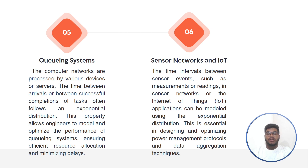The final application is in sensor networks and IoT. The time intervals between sensor events, such as measurements or readings in sensor networks or Internet of Things applications, can be modeled using the exponential distribution. This is essential in designing and optimizing power management protocols and data aggregation techniques.